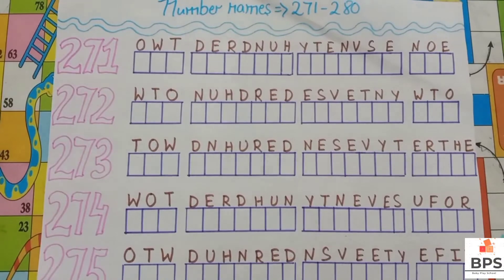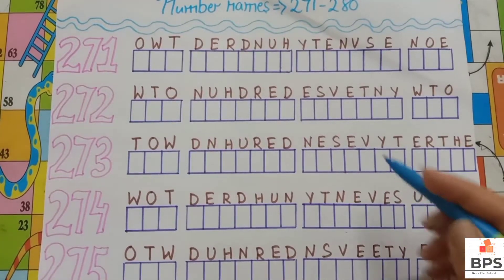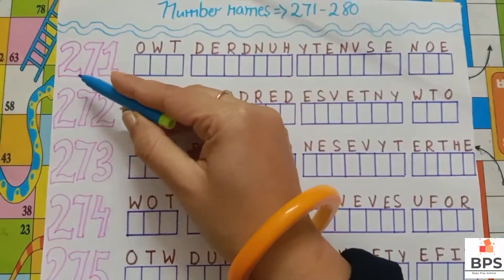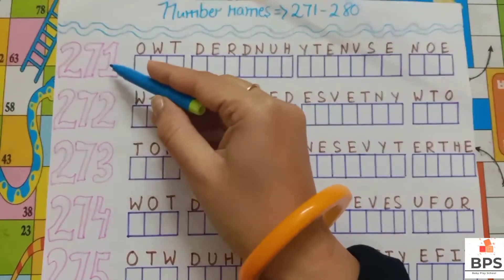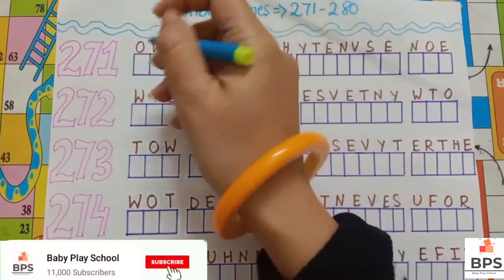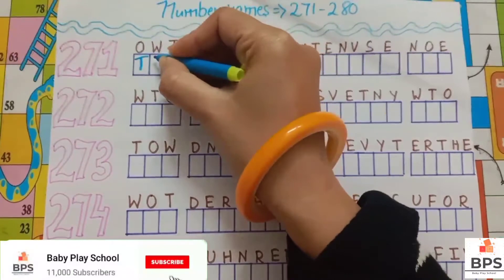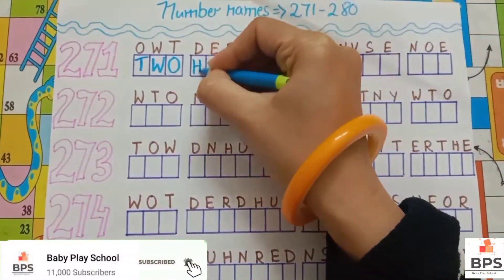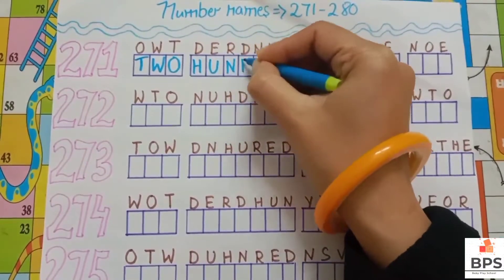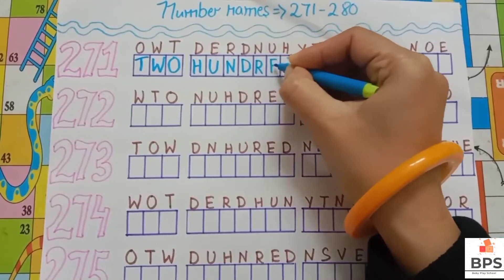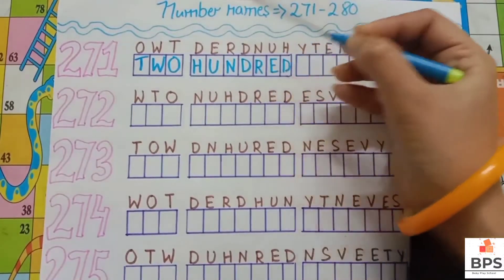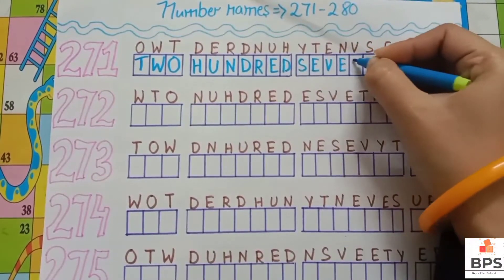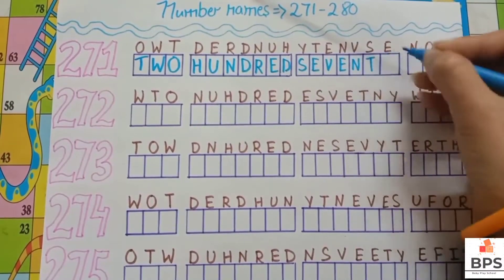Hello everyone, welcome to our channel. Today let's do the number names 271 to 280. So let's do it. 271: T, W, O, 2, H, U, N, D, R, E, D, 100, S, E, V, E, N, T, Y, 70.